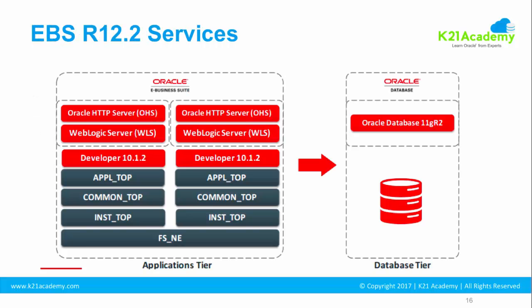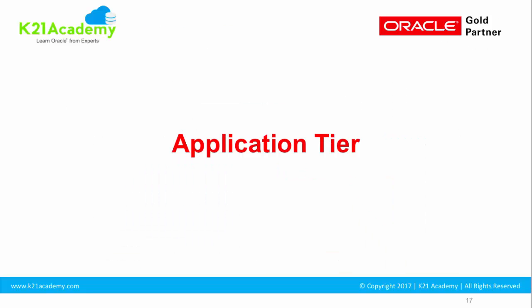Let's start with what services are in Oracle eBusiness Suite. As covered in the previous module on the file system, there are two tiers: application tier and database tier. You need to start services in both tiers. Because the application tier relies on the database, you need to first ensure services are started on the database tier and then start services on the application tier. Conversely, when stopping services, you first stop services on the application tier and then stop services on the database tier.